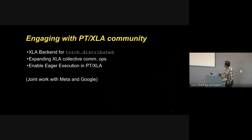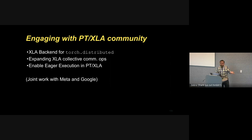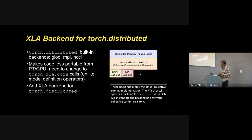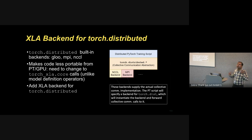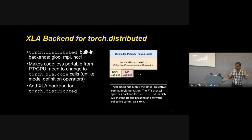I want to quickly showcase a few mature projects contributed back to the community jointly with our partners at Meta and Google, all driven by customer needs on AWS for ML workloads. The first is the XLA backend for torch.distributed. PyTorch was built for CPU and GPU first, and things run in operator kernel library mode in that world — but there is a new world of compiled mode for Trainium, TPU, and other accelerators.